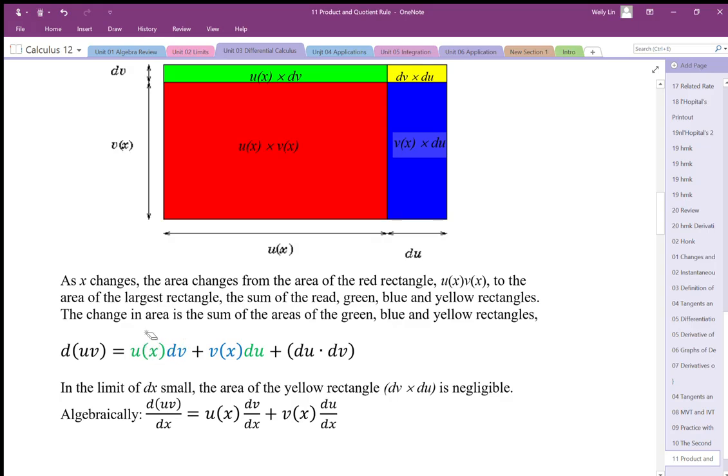Here's my green area, here's my blue area, and this is my yellow area. And this yellow area, because it is a very, very small change in v and a very, very small change in u, we're just going to say that's essentially insignificant, and we're left with this function here.